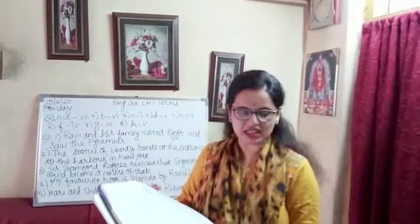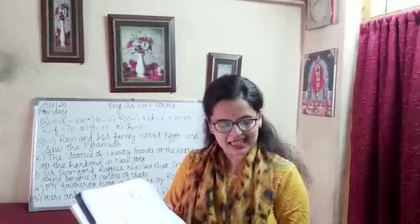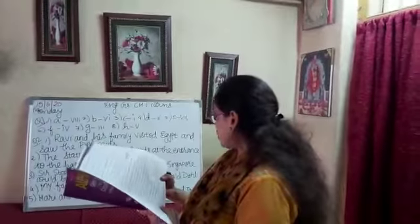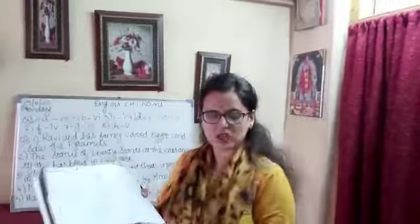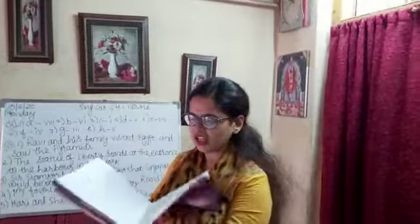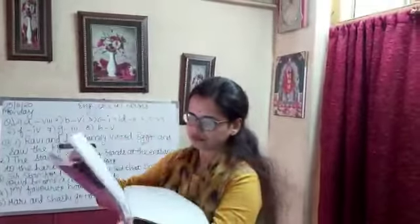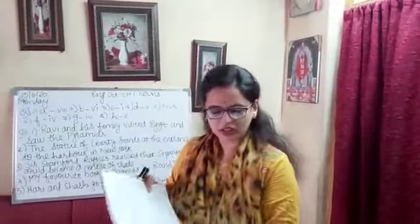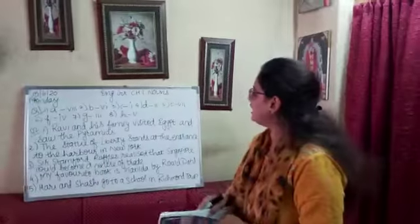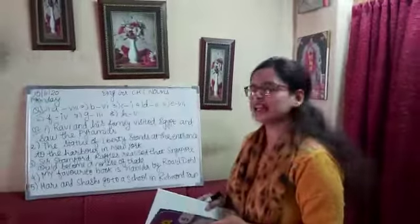First sentence: Ravi and his family visited Egypt and saw the pyramids. The proper nouns here are Ravi, Egypt, and Pyramids — so circle Ravi, Egypt, and Pyramids. The common noun is family, so underline family. Then rewrite the sentence as I have written on the board.